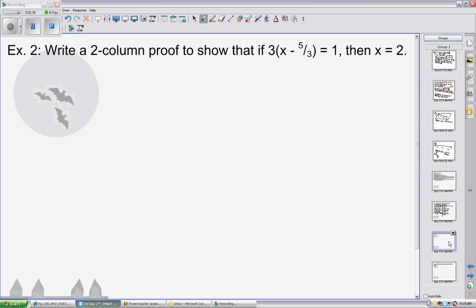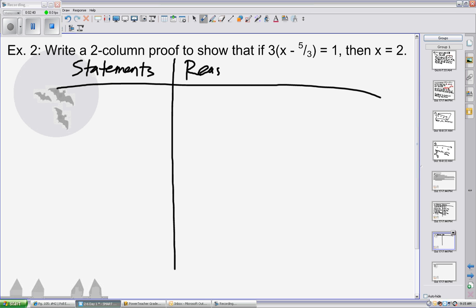Again, for every two-column proof, we must have statements, we must have reasons. The first statement and reason should always be the given. The second statement and reason for this problem is working with the first equation. We are asked to prove that x equals 2, so our last statement should be x equals 2.